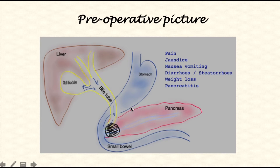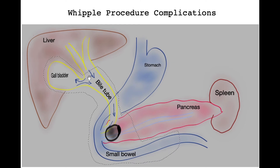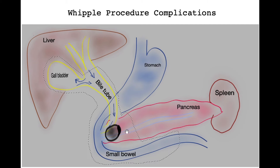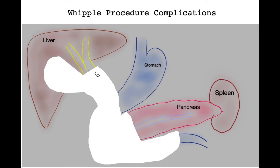Let us now understand the basics of the Whipple procedure and how complications may arise. The dotted line represents the tissue that is removed during the Whipple procedure. This includes the gallbladder, the bile tube, the small bowel, and the head of the pancreas including the tumor. Let's now review what this anatomy looks like once this tissue has been removed.